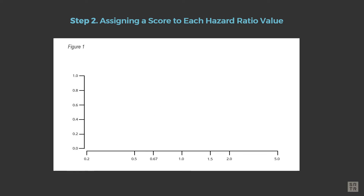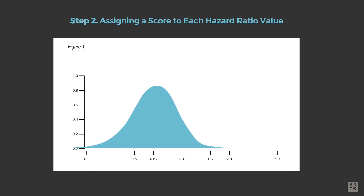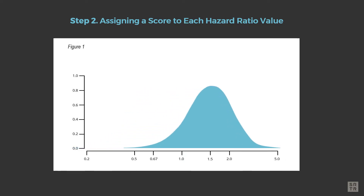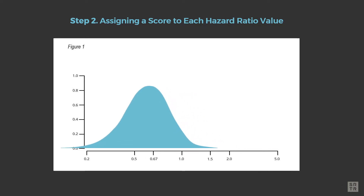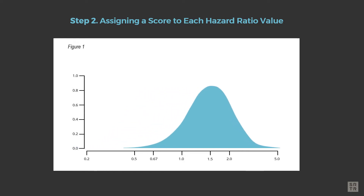Once we have an estimate of the program's hazard ratio as shown in Figure 1, we assign a score based on the location and spread of the bell-shaped curve. The location of the curve — how far it is to the left or right — tells us whether the program's failure rates are likely better than expected, with the curve shifting to the left of one, or worse than expected, with the curve shifting to the right of one.